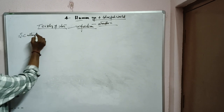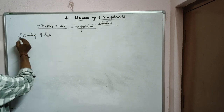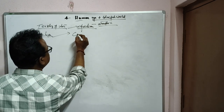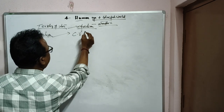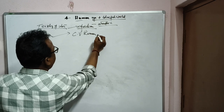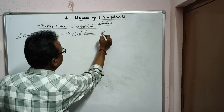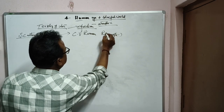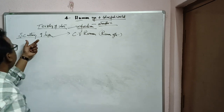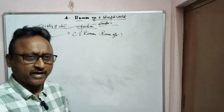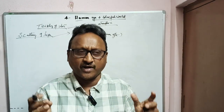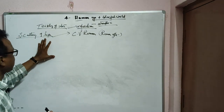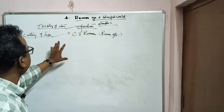Next is scattering of light. This was explained by the Indian scientist Sir C.V. Raman — known as the Raman effect. He successfully explained the scattering of light and dispersion of light, and he received the Nobel Prize for this work.